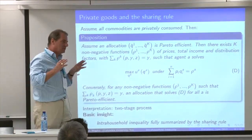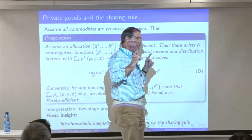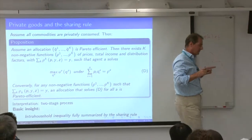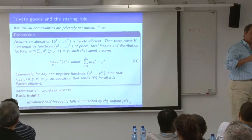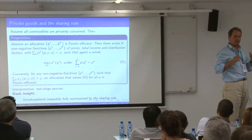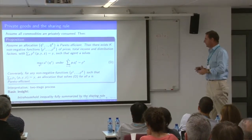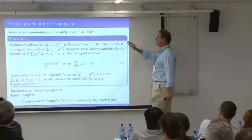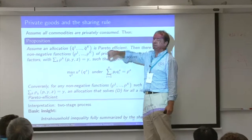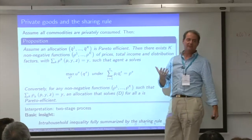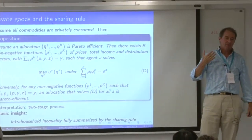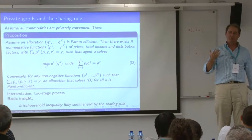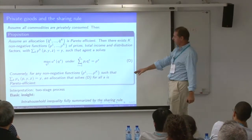Let me start with the conceptually simple case, which happens to be the worst case in terms of identification. Let's assume that all commodities are private. In that case things are very simple, because efficiency is equivalent to a two-stage decision process.